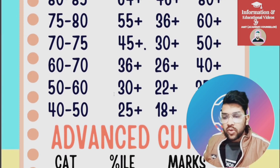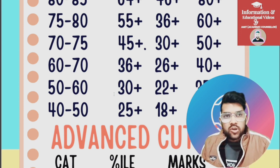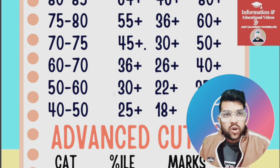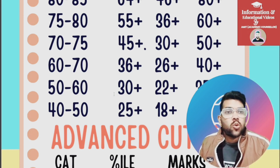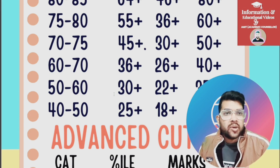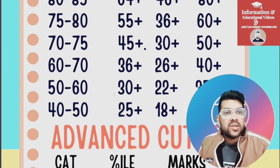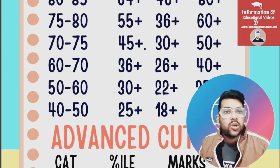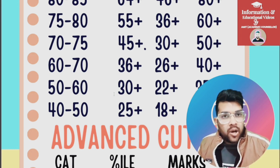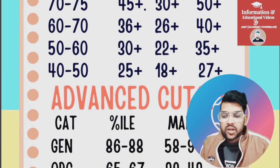Now regarding the JEE Advanced cutoff — the minimum percentile and marks needed to clear JEE Advanced. First, the percentile will remain the same across both attempts because it depends on the total number of unique students appearing in JEE Mains after combining both attempts. However, marks depend on the type of paper. In the upcoming attempt the paper will be a little tougher, but more students will also be able to score higher marks compared to the first attempt.